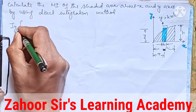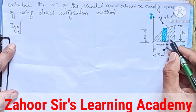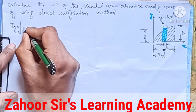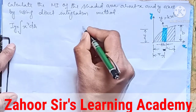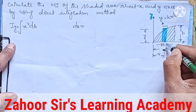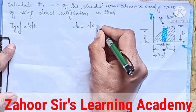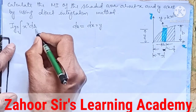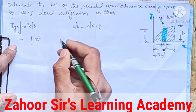The moment of inertia about the YY axis by direct integration method is equal to the square of the distance from this point to this point — the distance is x — so it is x squared, times the area of this elementary strip dA. As I said in the previous examples, dA is equal to the breadth dx times the height y, so dA = y·dx. We can substitute that, giving us the integral of x² · y · dx.